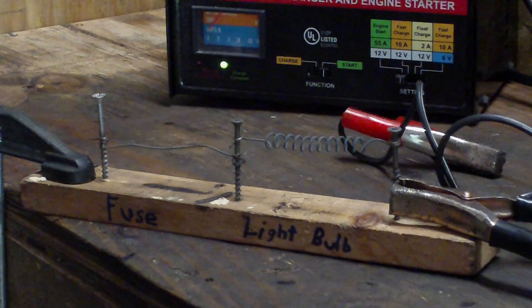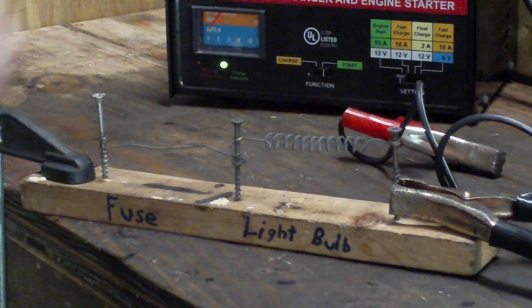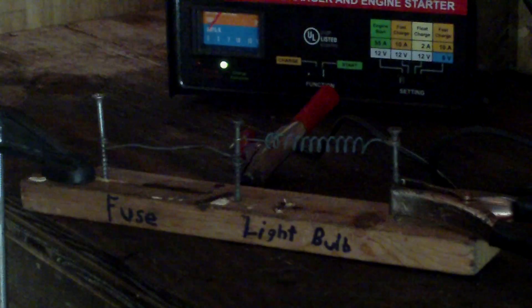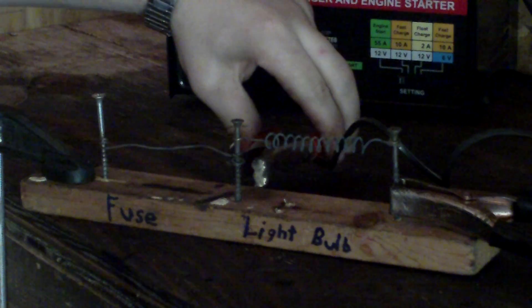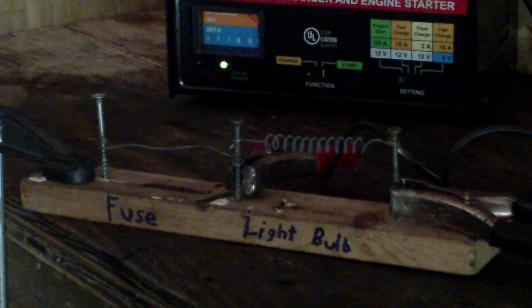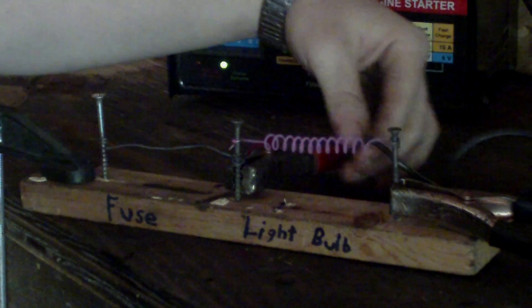It's in a vacuum so it don't burn up. And how a fuse works, pretty much run too much current through a wire. I'm putting 12 volts through this little piece of wire here, and this coil will start glowing red.